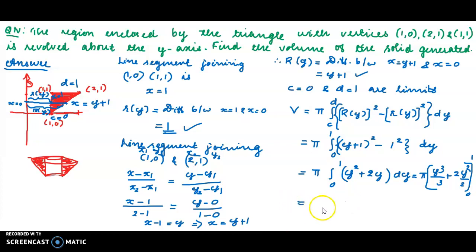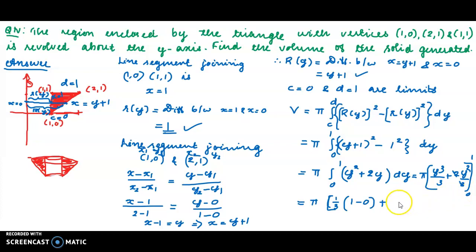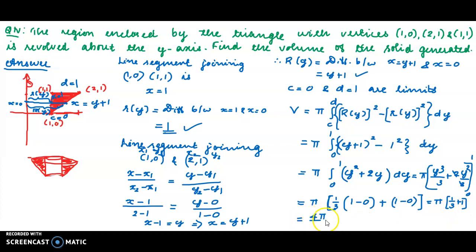Applying the limits, we integrate y squared plus 2y from 0 to 1. This gives pi times [y cubed over 3 plus y squared] from 0 to 1, which equals pi times (1/3 plus 1) equals pi times 4/3. The volume of the required solid is equal to 4π divided by 3.